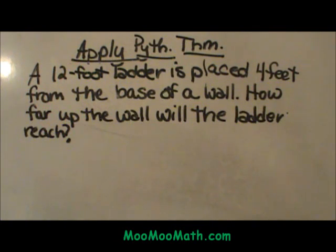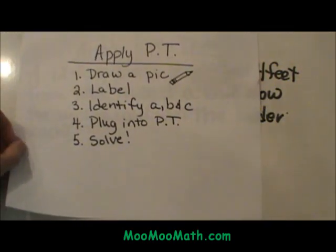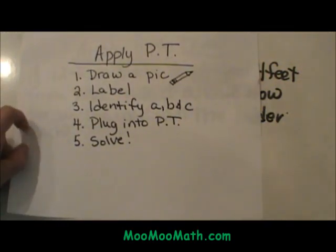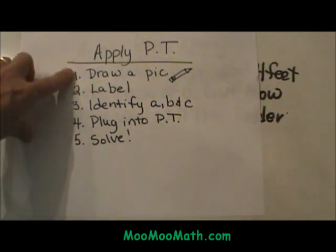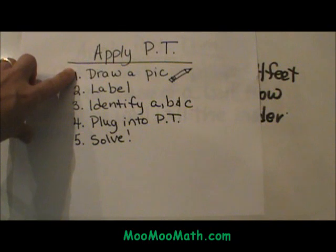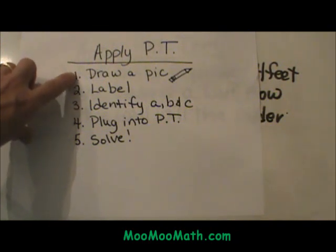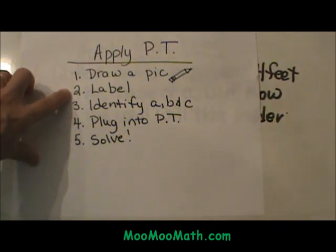I'm going to start with the rules of working with word problems in geometry. The first rule is you always draw a picture. Get out your marker and draw a scenario of what this situation looks like. Then label it — take all the information and label it on that picture.